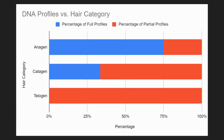From this graph, 75% of anagen hairs generated full profiles, one-third of catagen hairs generated full profiles, and none of the telogen hairs generated a full profile.